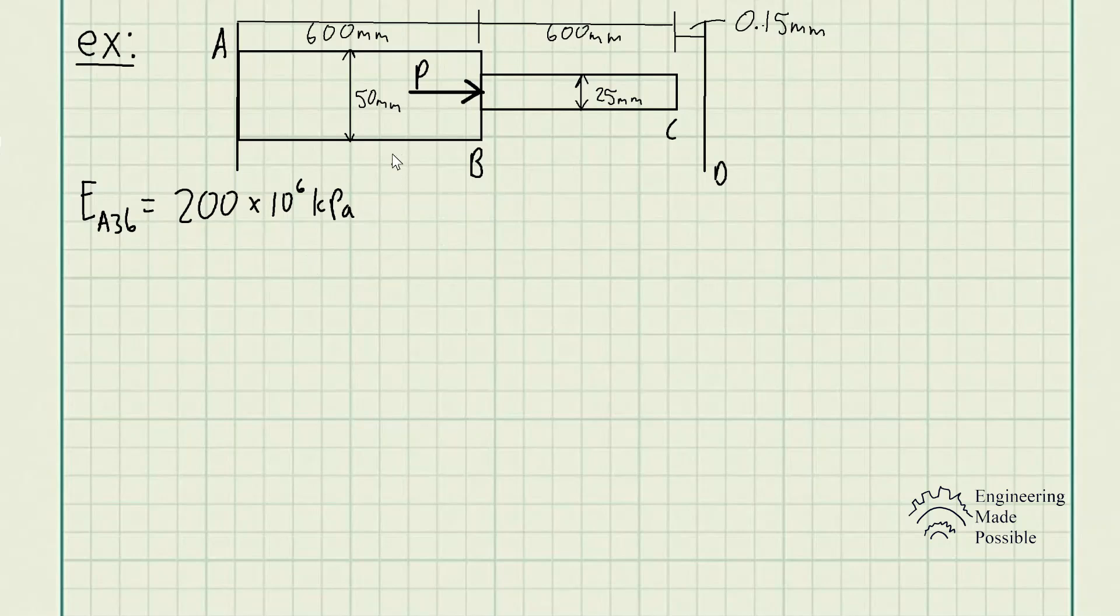Now we have the diameters of each of these rods. We have an assembly of these two rods, both made of the same A36 steel material, and we have the diameters being 50 mm and 25 mm with the appropriate dimensions.